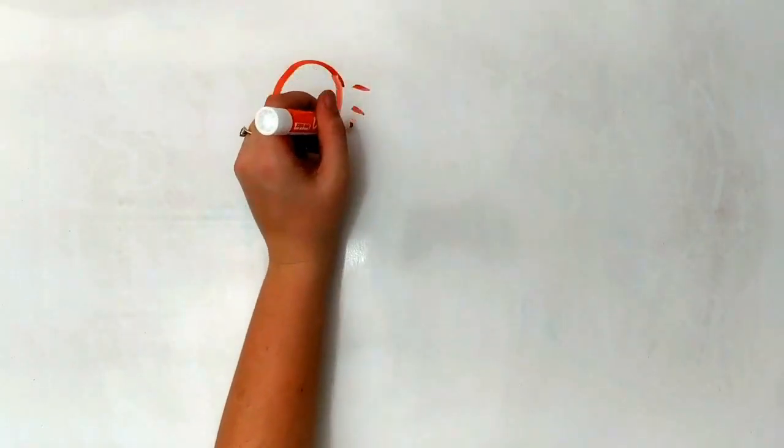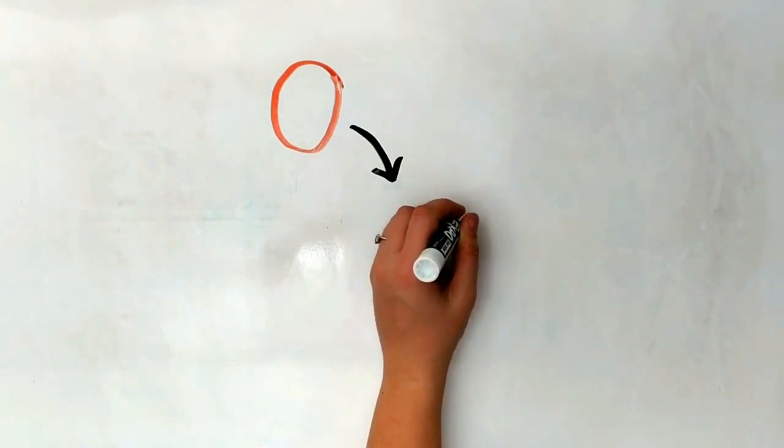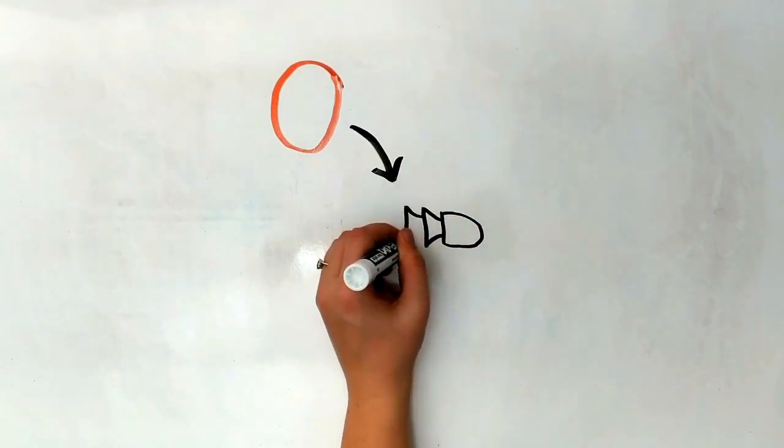After the fireflies mate, the female will lay her eggs underground. Some firefly eggs will glow when they are disturbed. This is a warning to predators that they do not taste good.